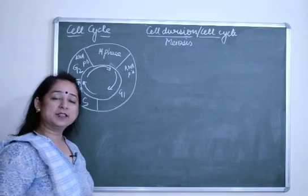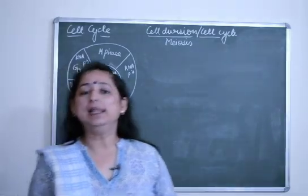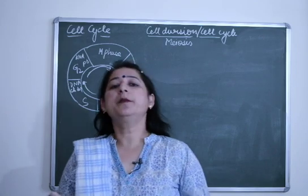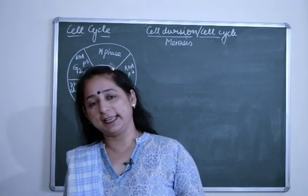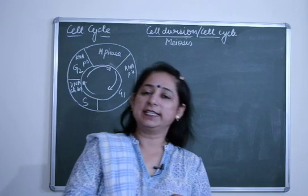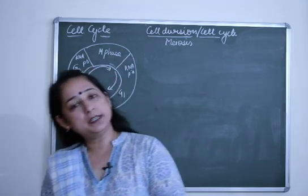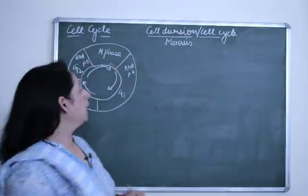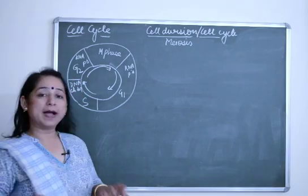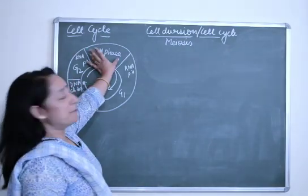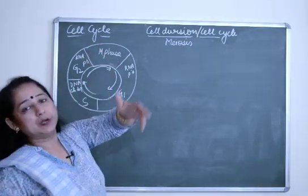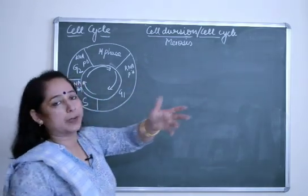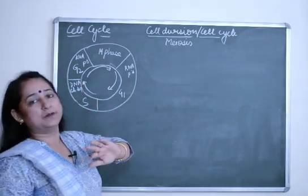Let's start with cell cycle. The cell cycle is the whole phase — a cell is always in a cell cycle. It can be in a resting stage or a dividing stage, but it follows the cell cycle. We have the M phase, which we've already done, covering the process of cell division and meiosis depending upon the type of cell.